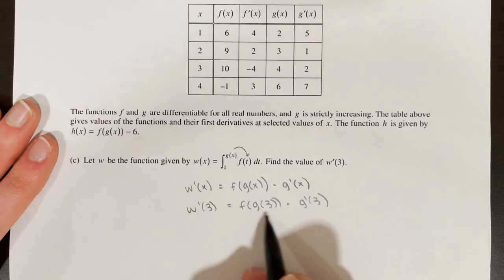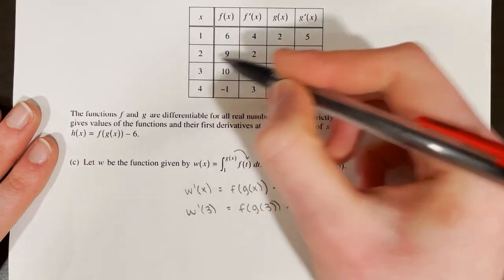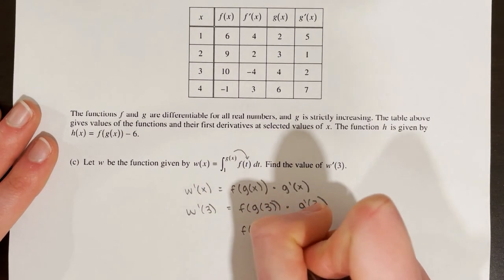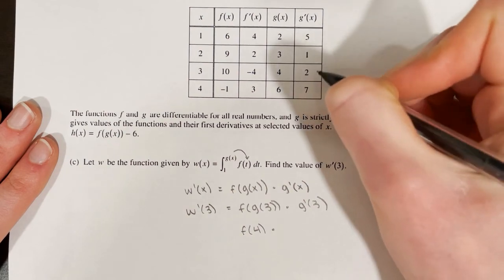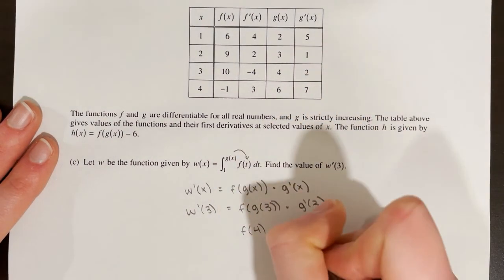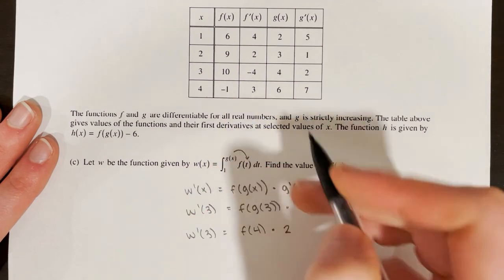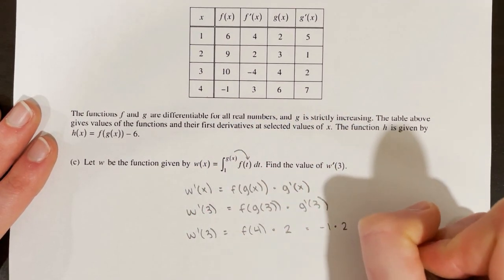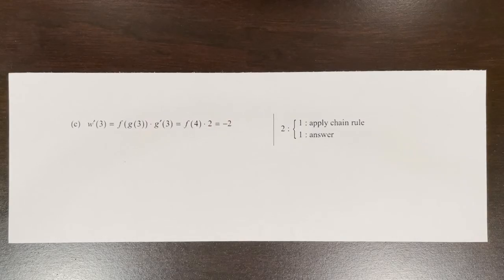So w prime of x equals f of g of x times g prime of x. Plugging in 3: g of 3 equals 4, so this is f of 4 times g prime of 3. From the table, g prime of 3 equals 2 and f of 4 equals negative 1. So w prime of 3 equals negative 1 times 2, which is negative 2.